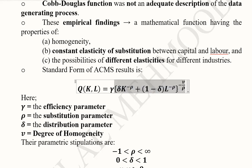For example, if γ = 0.5, output is halved. Technology can improve this efficiency parameter so that the same labor and capital produce more output.